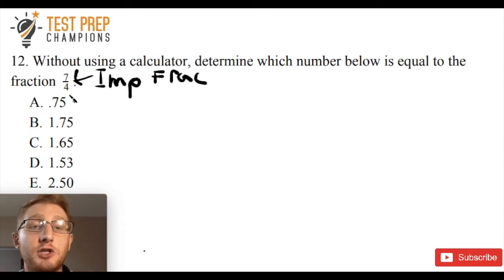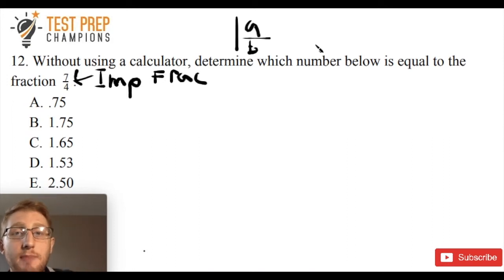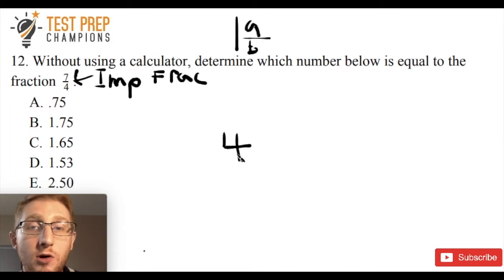And whenever you've got an improper fraction, you can always convert it to a mixed number. So the way a mixed number is going to look, it's going to have a whole number out front, and then it's going to have some number over some other number. The thing is that a mixed number is going to have the same denominator as the improper fraction. So we can convert this 7 fourths into a mixed number. It's going to have the same denominator, we can start off our mixed number with a 4 in the denominator.